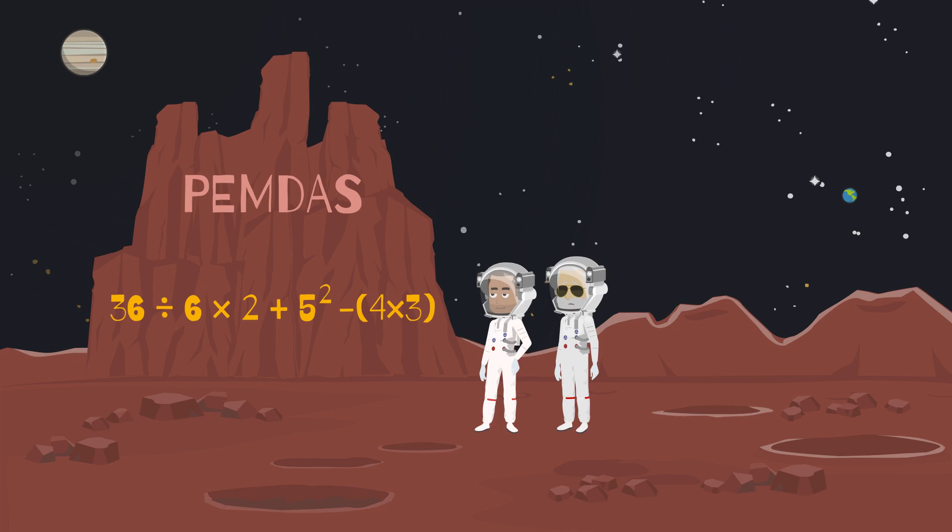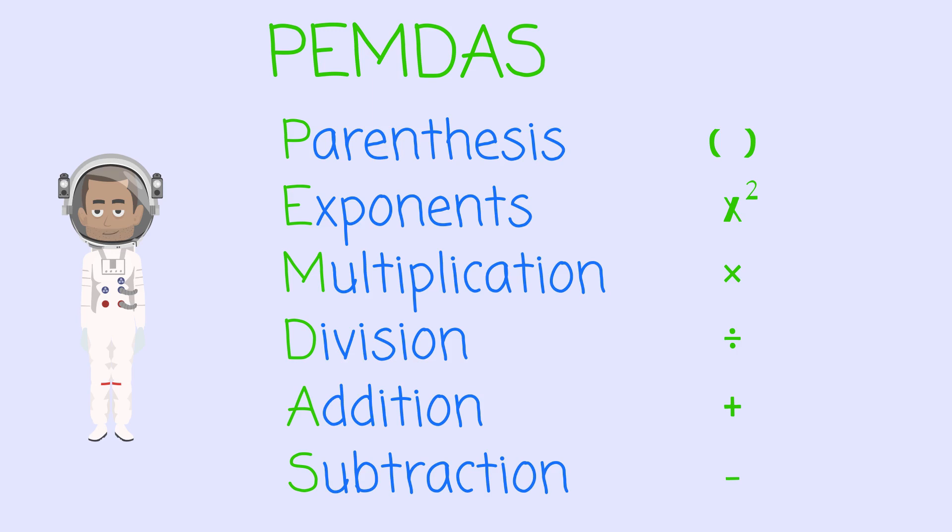Well, there it is. I think I can solve this one. Help me make sure I get the steps right. Okay, so the P is for parenthesis, so I'll solve those first.